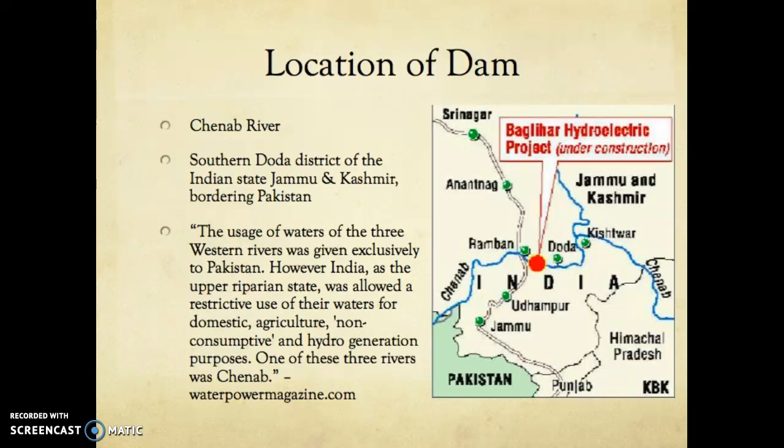The location of the dam is in the southern Doda district of the Indian state of Jammu and Kashmir, bordering Pakistan. The usage of waters of the three western rivers was given exclusively to Pakistan. However, India, as the upper riparian state, was allowed a restrictive use of their waters for domestic, agriculture, non-consumptive, and hydro-generation purposes. One of these three rivers was the Chenab.